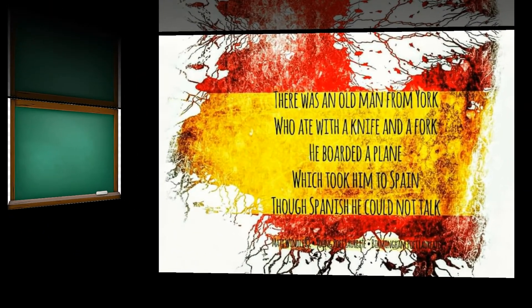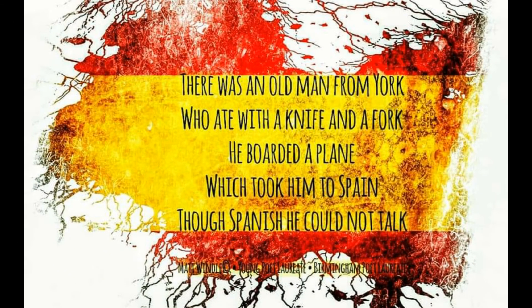Here's the first poem that I ever wrote way back during the first year of primary school in year three. It just so happens to be a limerick. There was an old man from York who ate with a knife and a fork. He boarded a plane which took him to Spain, though Spanish he could not talk.